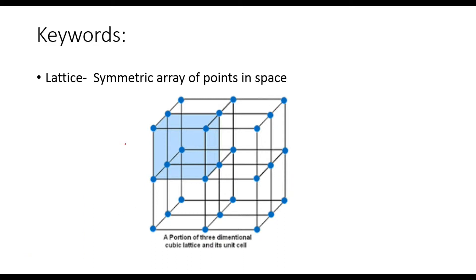From this diagram you can understand that yes, this is a lattice. Why? Because all the atoms are arranged in a systematic manner, in a sort of array. This is the cubic lattice and this blue shaded part shows a unit cell.